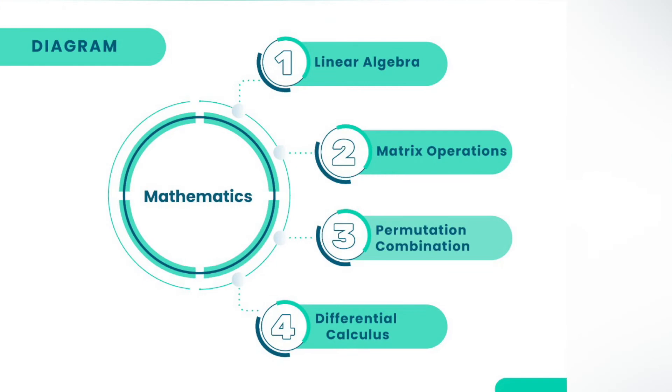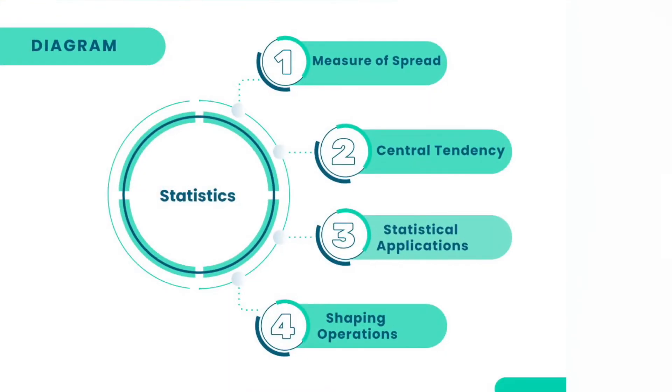When I talk about mathematics for data science, the core concepts include matrix operations, linear algebra, differential calculus, and some additional topics in line with that. Within statistics, there are a wide number of applications. Statistics is the heart of data science — it is used to take inference and to make decisions from data. The concepts include measure of central tendencies, measure of spread or dispersion, shaping arguments, and statistical applications for inferential analytics. These are all the topics required within statistics.